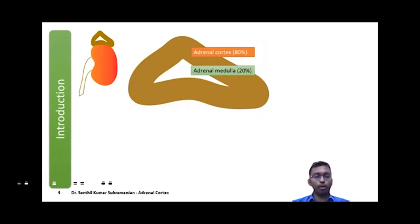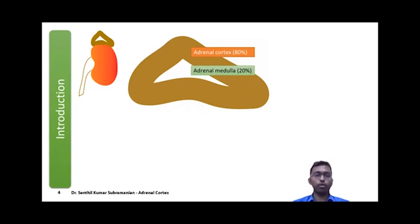The suprarenal glands or adrenal glands consist of two separate endocrine glands: the outer adrenal cortex, which constitutes 80% of the adrenal mass, and the inner adrenal medulla, which constitutes only 20% of the adrenal mass. These two glands are different both functionally and in embryological origin.